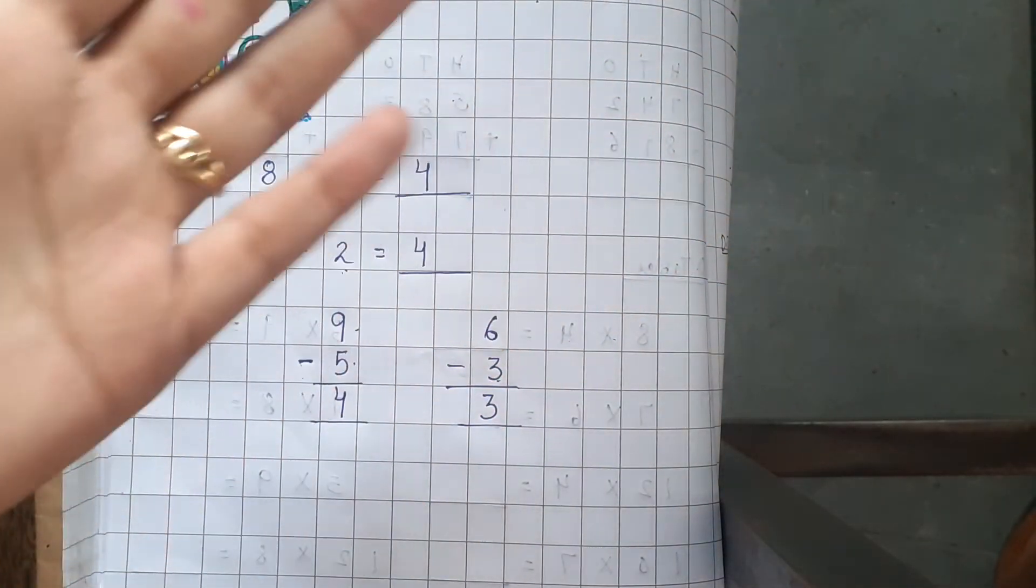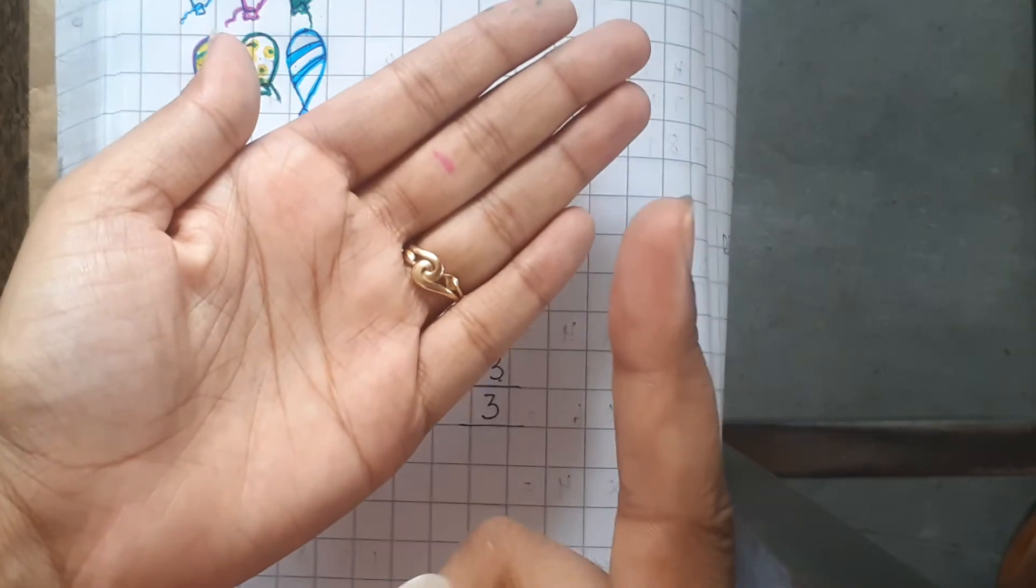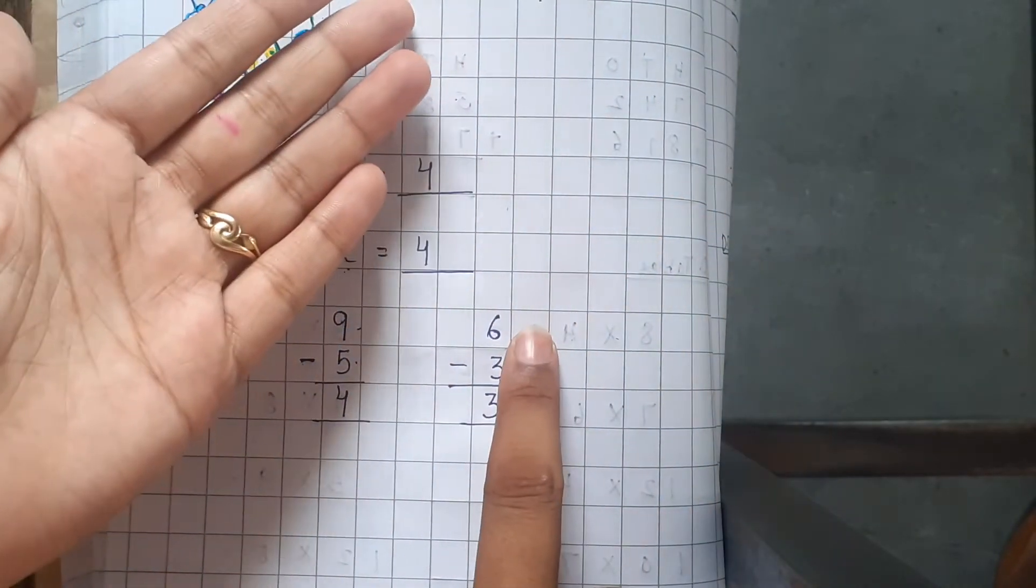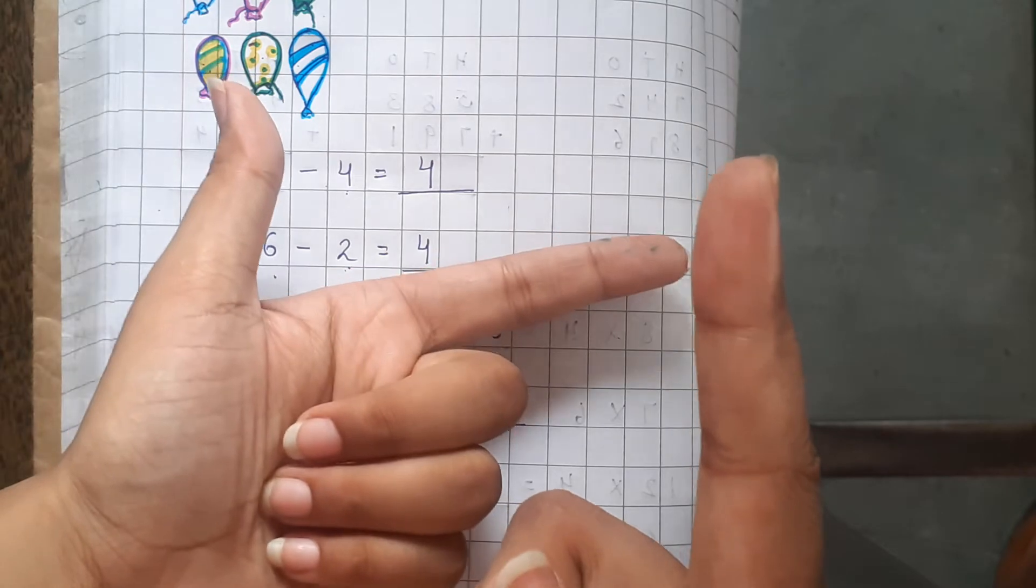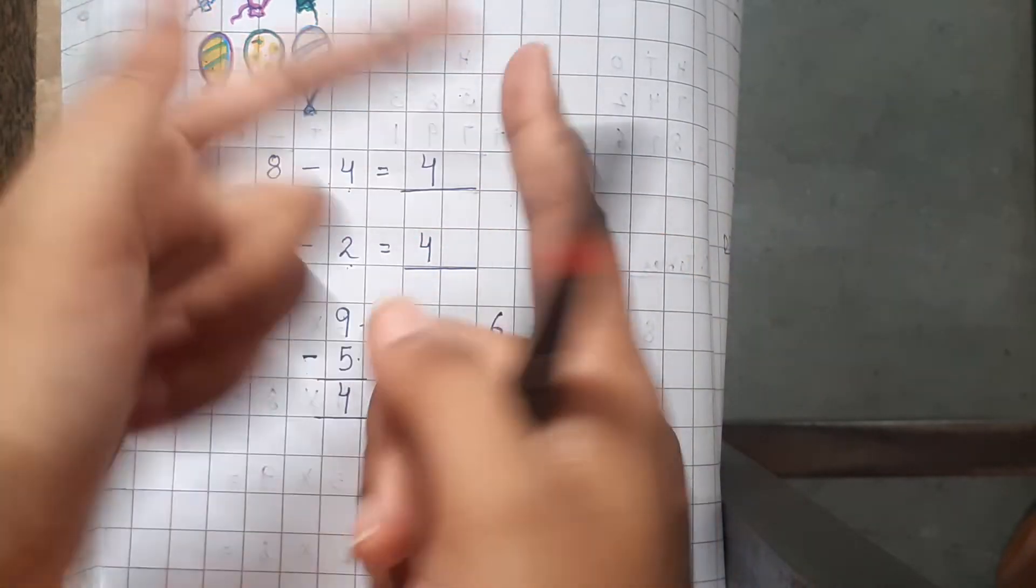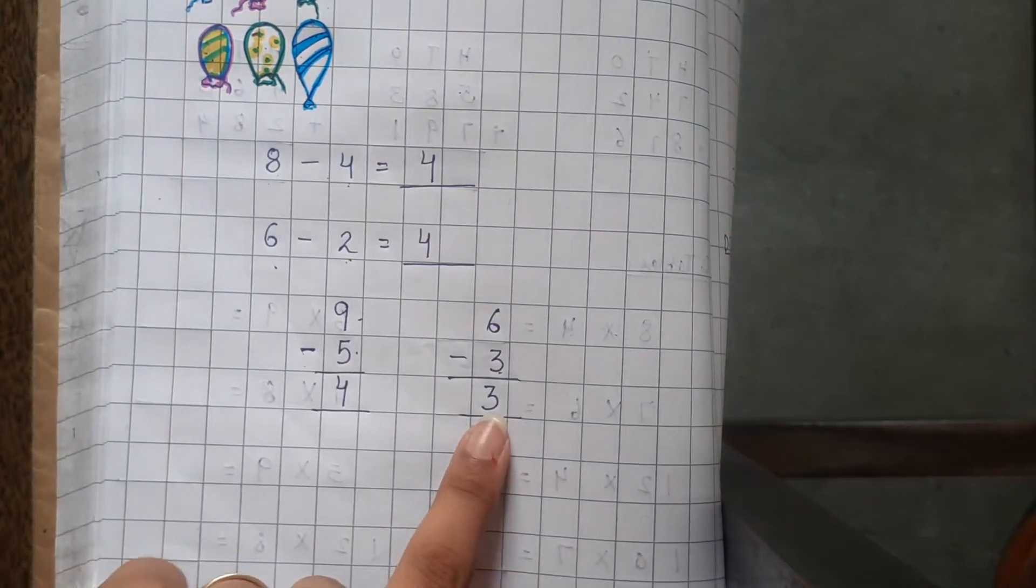You can use fingers also. So, 6 fingers open and 3 fingers are closed. So, 1, 2 and 3 are left.